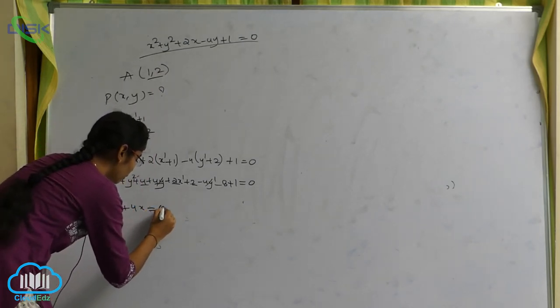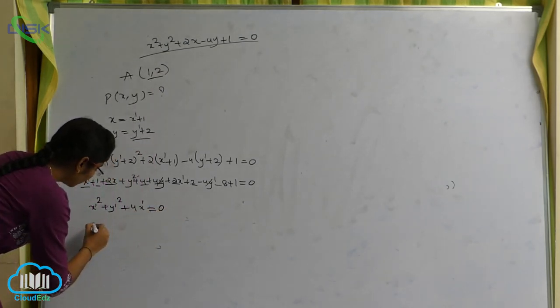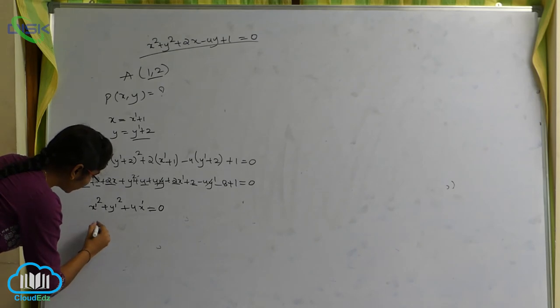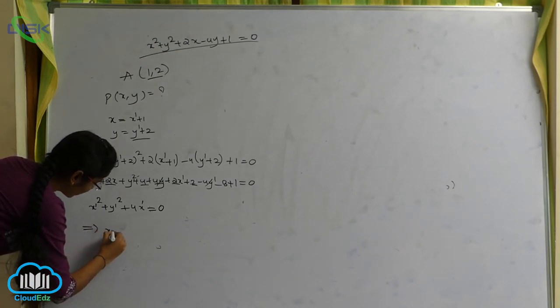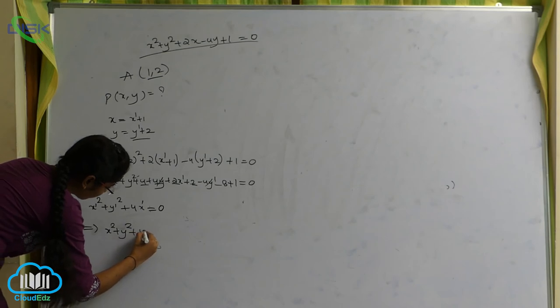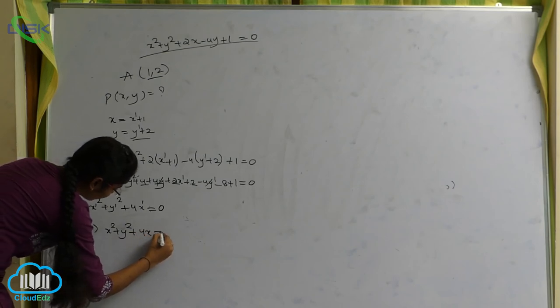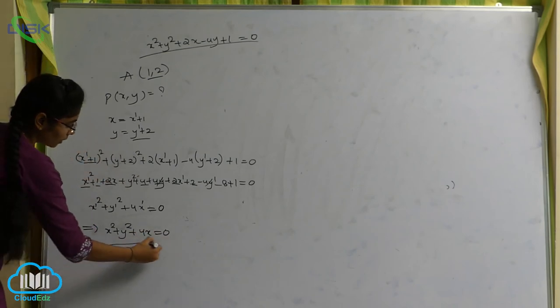So the result is x dash squared plus y dash squared equals 0. This is how we discuss this.